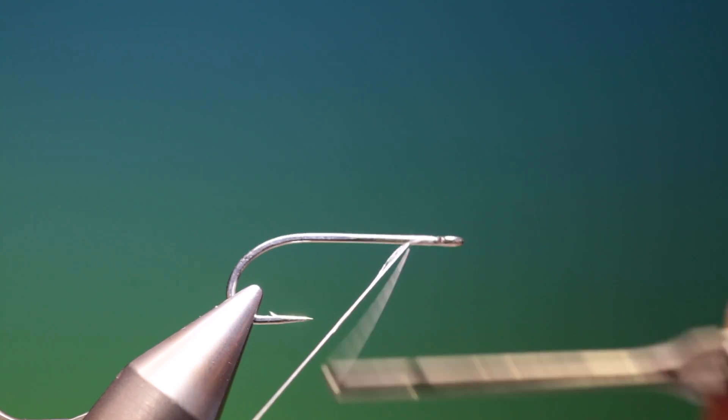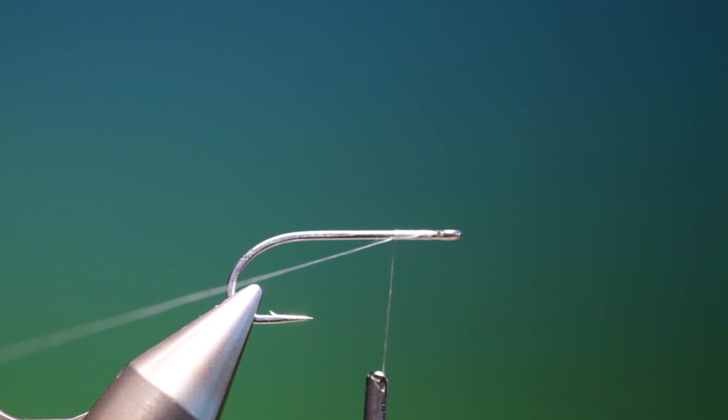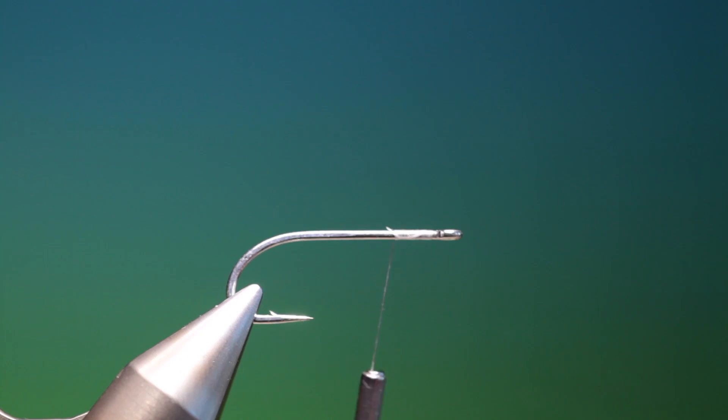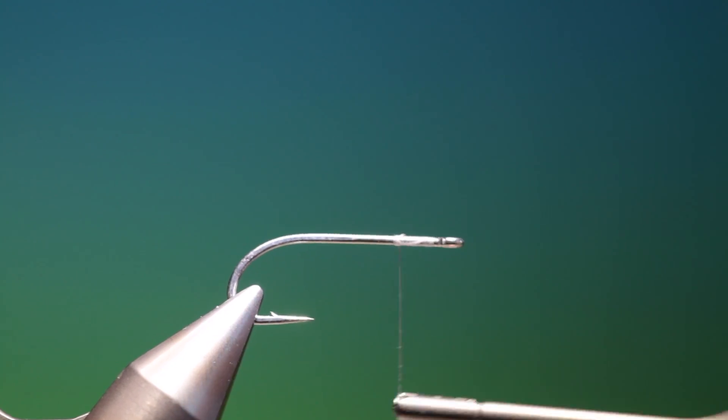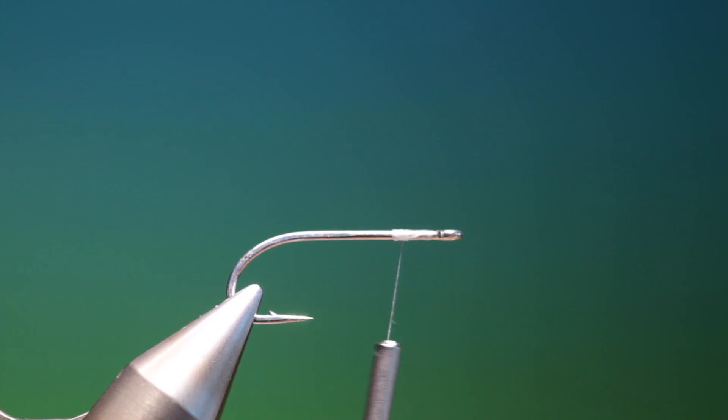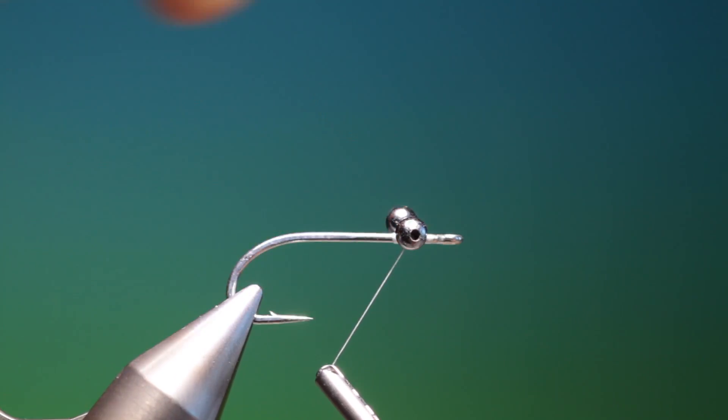What we need first is just a small foundation to accommodate the eyes. This wants to be about a third of the way up the hook shank. We take some bead chain eyes and fasten it just with a couple of turns like that.